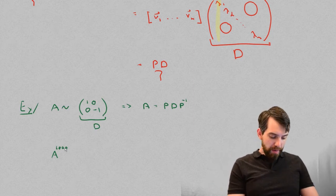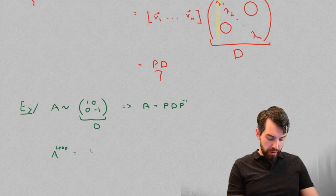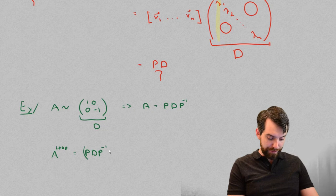Well, if I think about what this is using my formula, it's P, D, P inverse. That's the first copy of A times the second copy of A. So, P, D, P inverse.